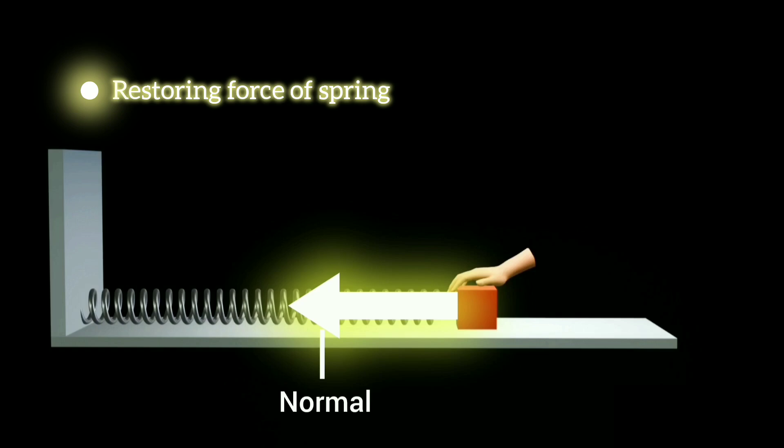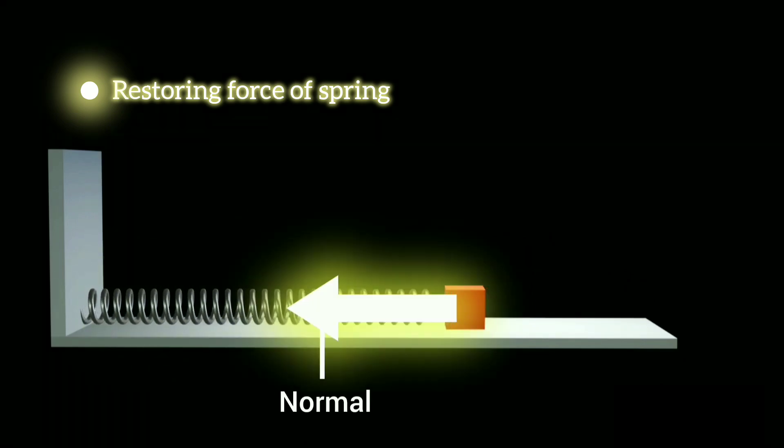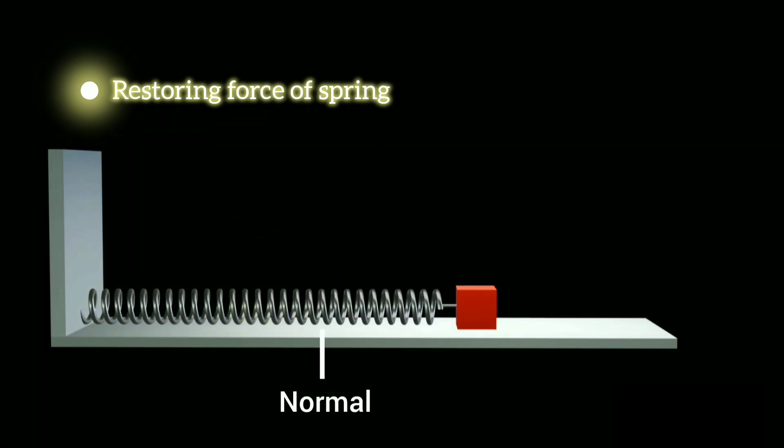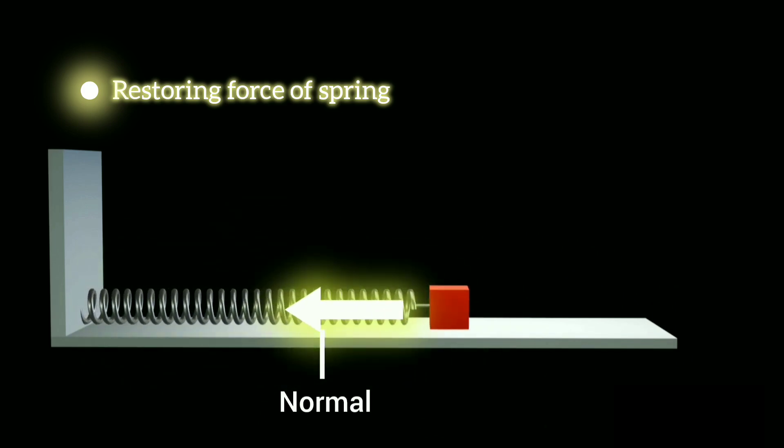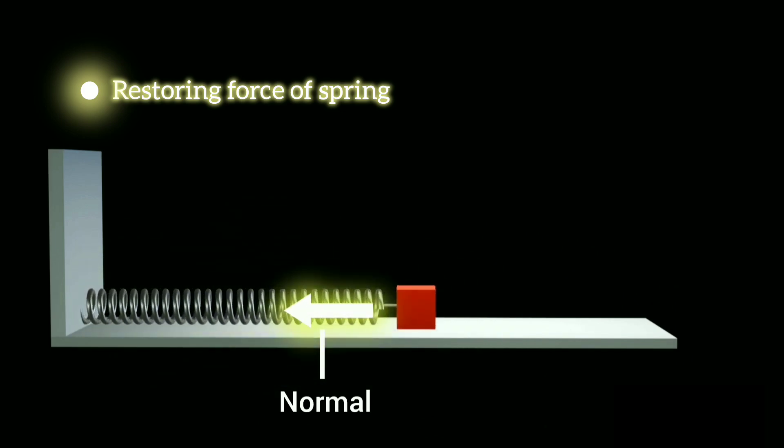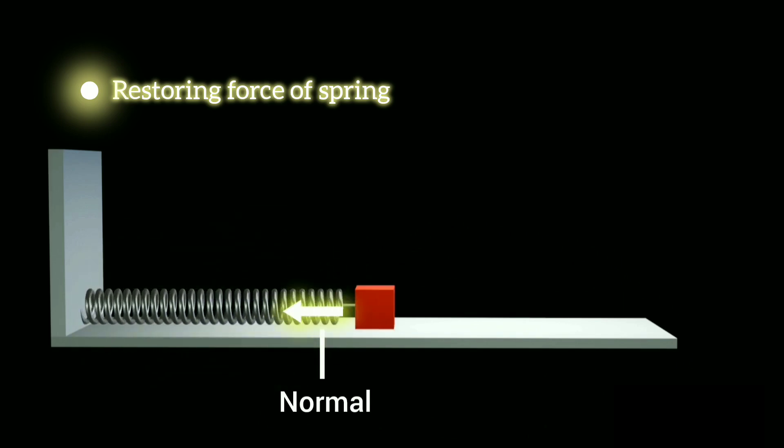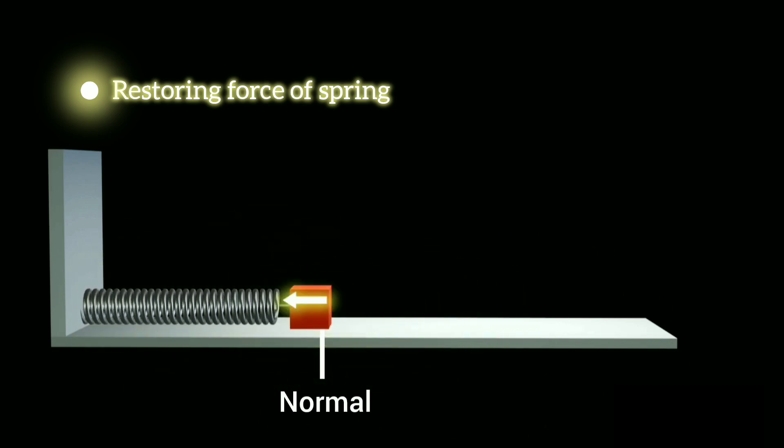When you release the block, it starts speeding back towards the left and keeps oscillating. It's like a back and forth dance, with the spring's pull getting stronger as it moves away from its normal position and weaker as it gets closer to normal position.